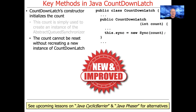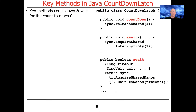The reason why this doesn't work for cyclic approaches is you can't reset the count without creating a new instance of CountdownLatch. So if you need to reset the count — which is what you need for cyclic barriers — you should take a look at the CyclicBarrier or the Java Phaser. We'll look at those later.